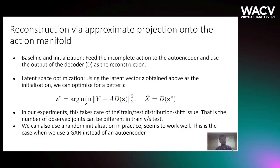At test time, we first feed the incomplete test sequence through the autoencoder to get the initial latent space representation z, and the output of the decoder at this point can be used as a baseline reconstruction. In our method, however, we perform latent space optimization — finding the optimal z-star such that this function is minimized — and the output of the decoder with that z-star serves as the final reconstruction.